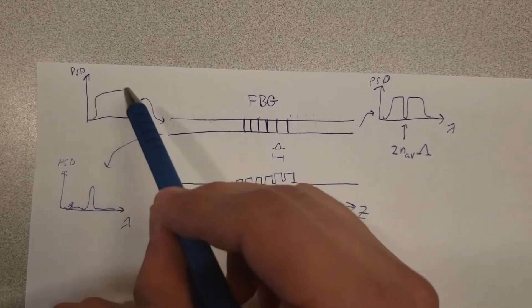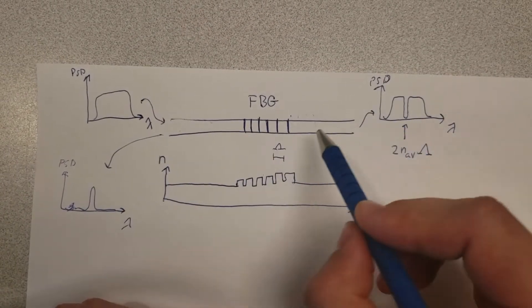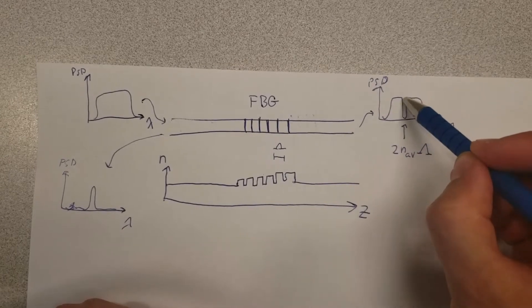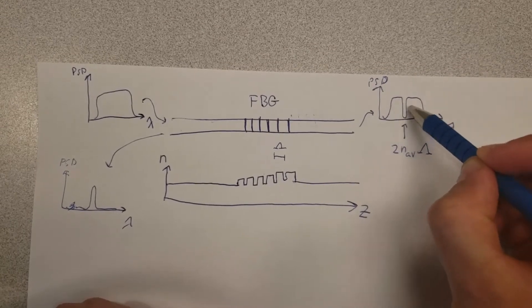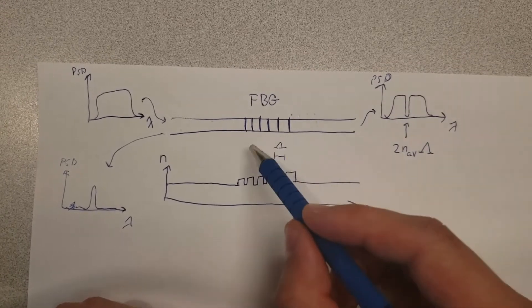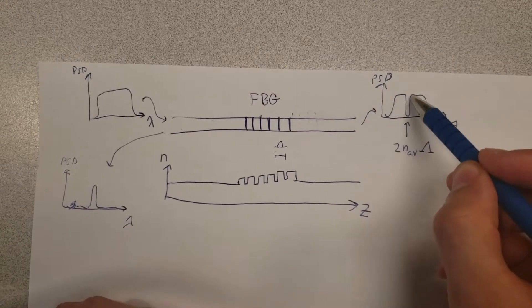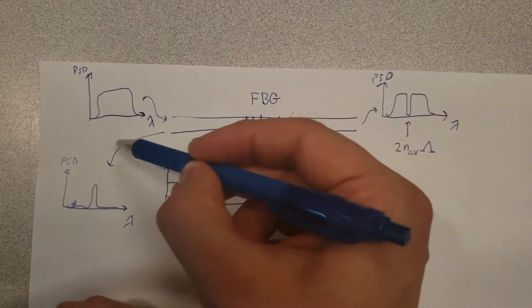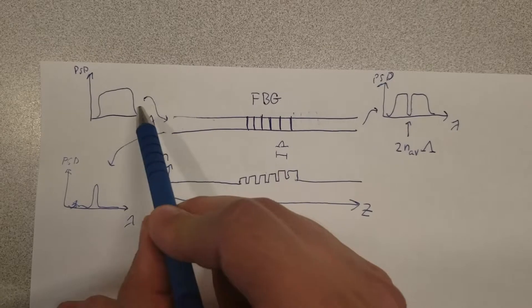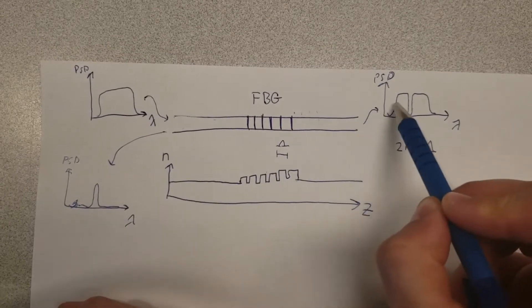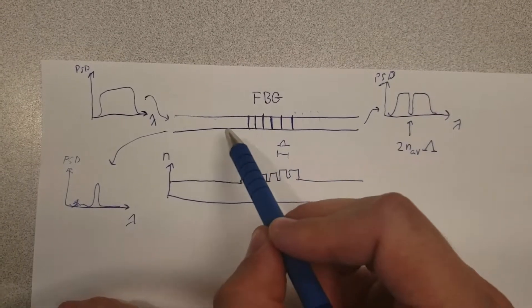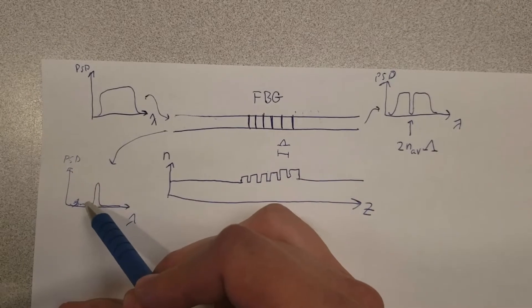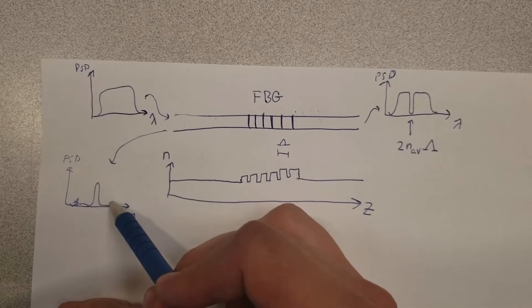So you can send broadband light into a fiber Bragg grating, and what comes out is the same broadband spectrum except the wavelengths that match the grating spacing are dropped — or more precisely, reflected backwards. If you measure the transmission spectrum you'll see the whole thing with a drop, or if you measure the reflection spectrum you'll see essentially just the wavelength that gets reflected backwards.